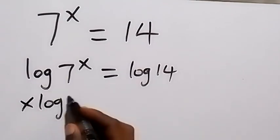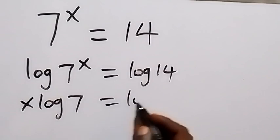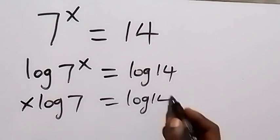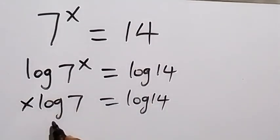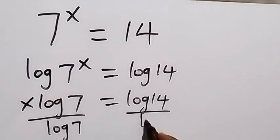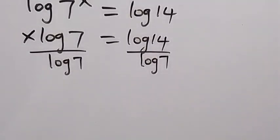Then we can remove this log 7 on this side by dividing both sides by log 7. Log 7 cancels on the left side, and we have x left, which equals log 14 over log 7.